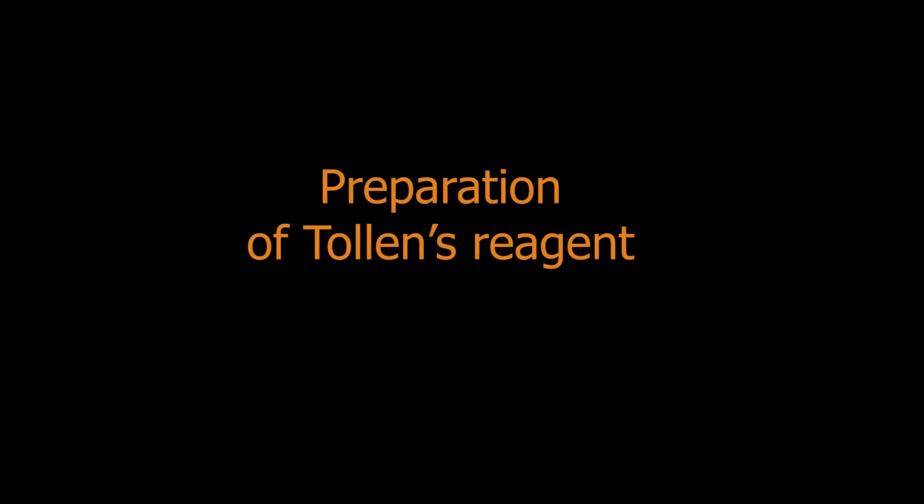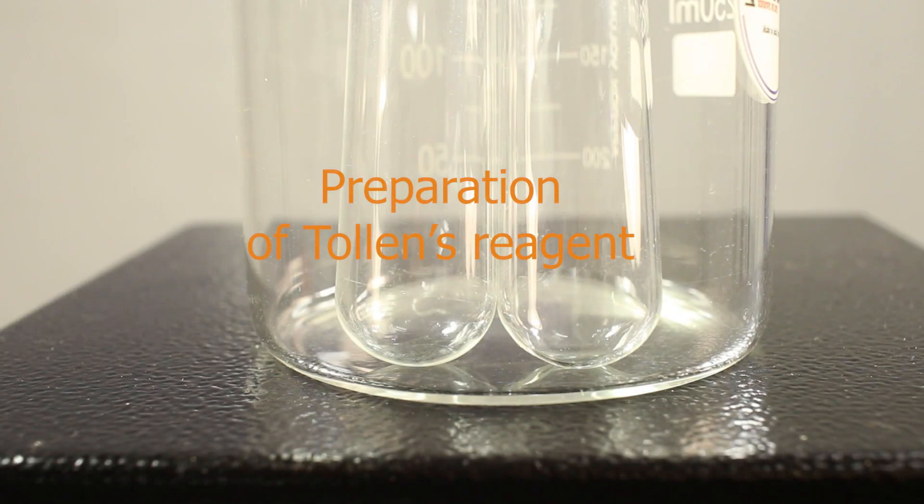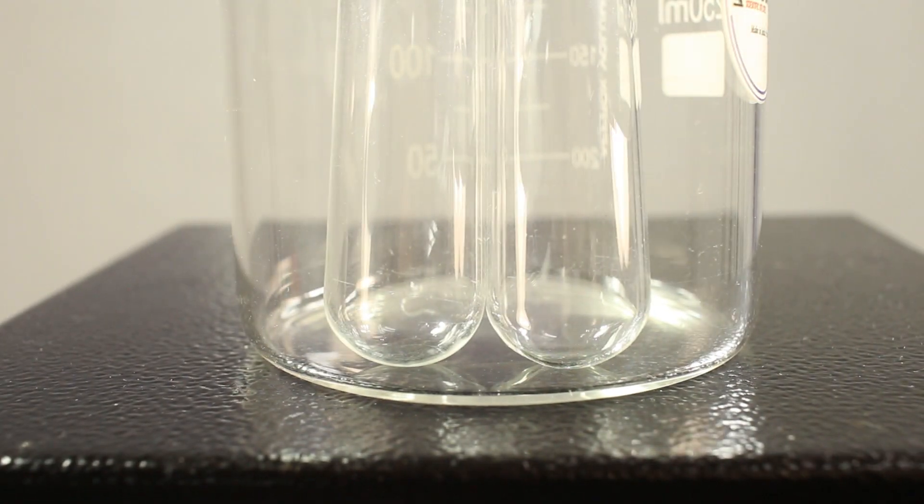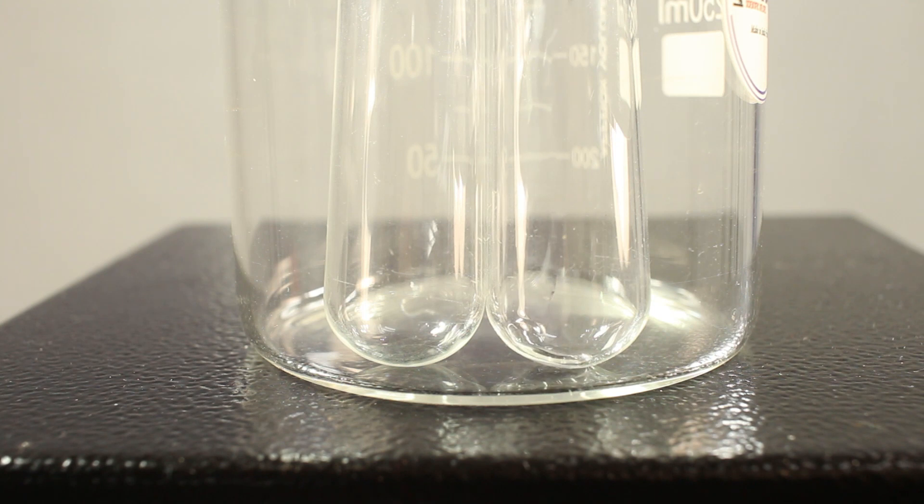First, we have to prepare Tollens reagent though. Tollens reagent is essentially an alkaline solution of silver-1 ions. They can be kept in solution because they form soluble complexes with ammonia molecules.